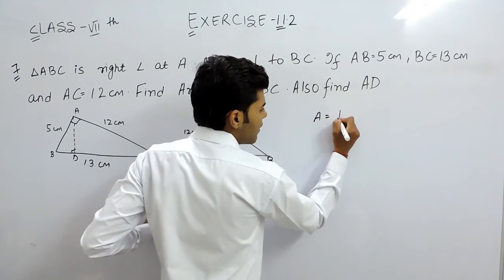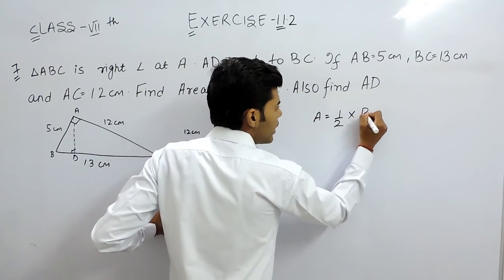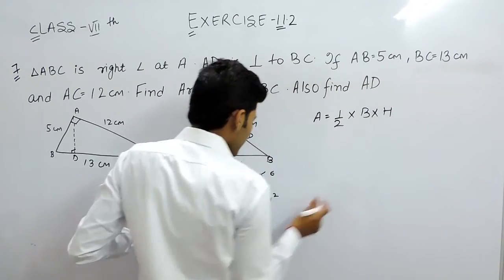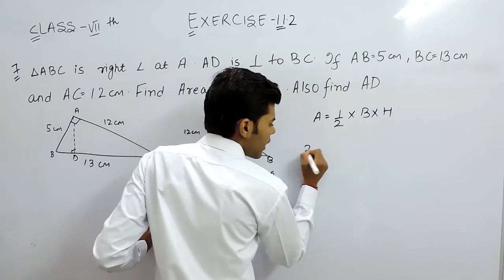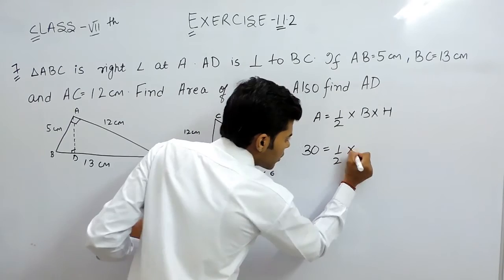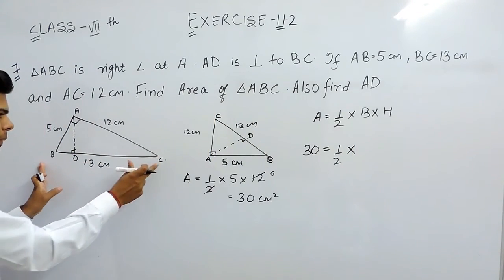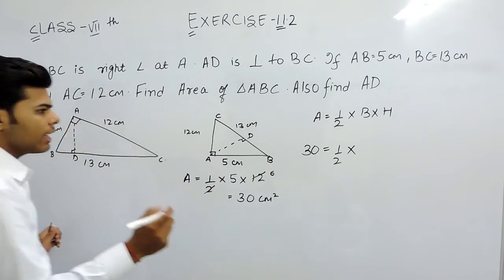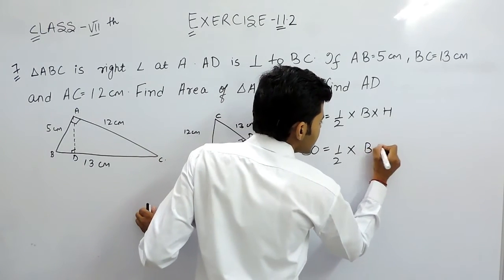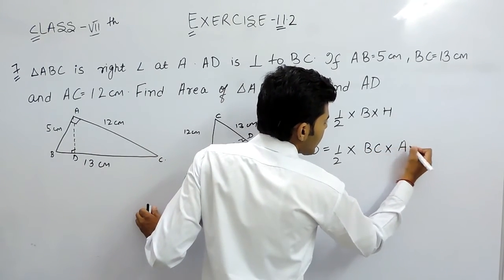So area is equal to half into base into height. Area is 30 equals to half into, we will take the base to be BC and height to be AD. BC multiplied by AD.